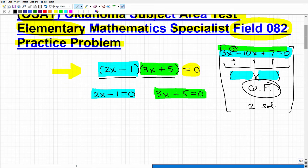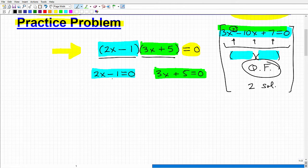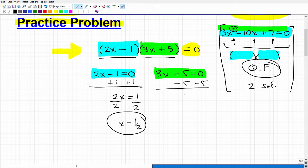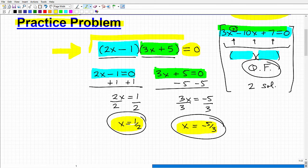Okay, so hopefully you were able to solve these two little simpler equations. So this one, I'm going to go ahead and add 1 to both sides. I get 2x is equal to 1. I'm going to divide everything by 2. So x is equal to 1 half. That's one solution for this quadratic equation. Let's go ahead and solve for this one. Subtract 5 from both sides of the equation. I get 3x is equal to negative 5. I'm going to divide both sides by 3. So I get x is equal to negative 5 thirds.